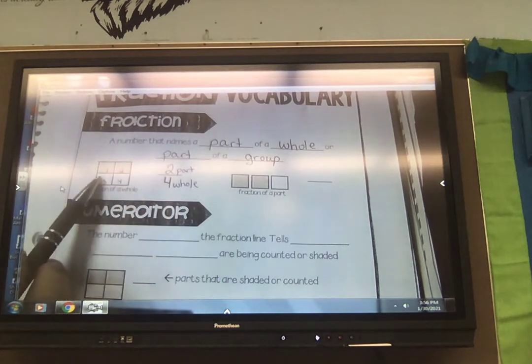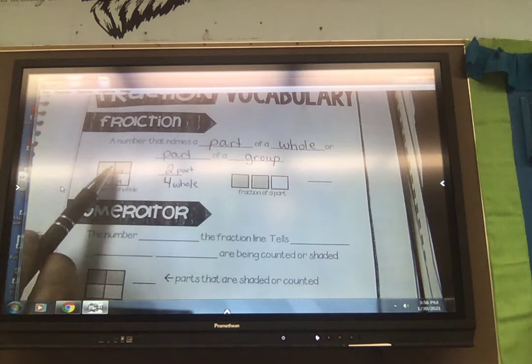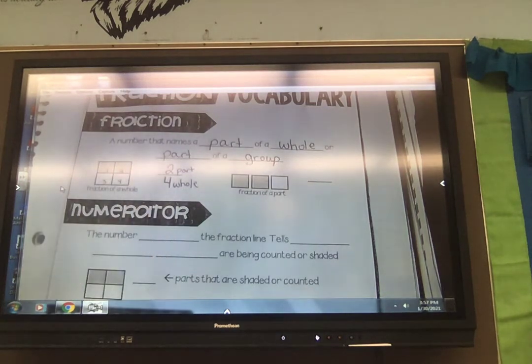So I'm going to put a two on the top, and we'll talk about what that's called in our next word. So two-fourths would be an example of part of a whole. Two-fourths of this shape, of this whole, is shaded.